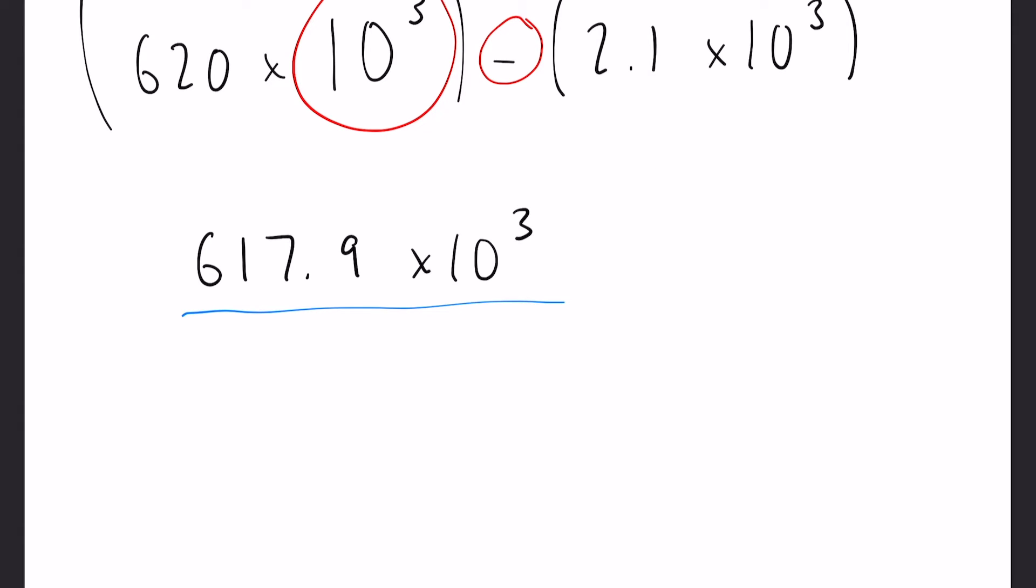Now if you haven't seen my video on standard form previously, I recommend you go watch that first. But in that video I spoke about the general form for standard form, and it is A times 10 to the n. Our n can be any number, in this case it is the 3. However, the A must be between 1 and 9.99 or less than 10.